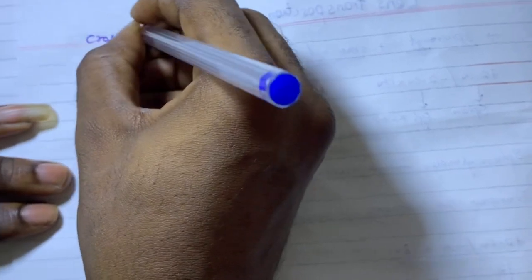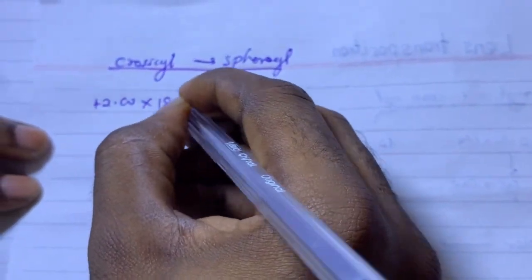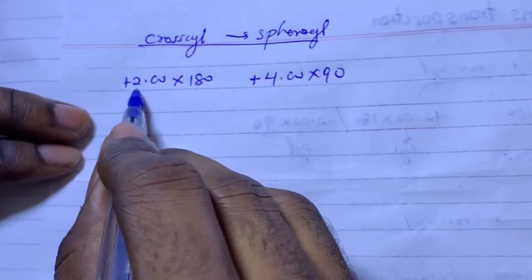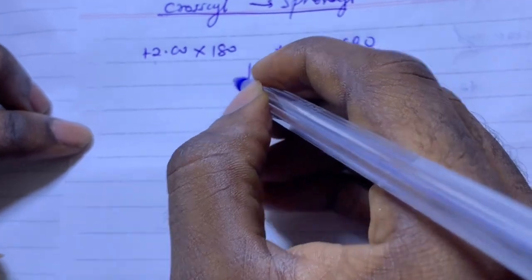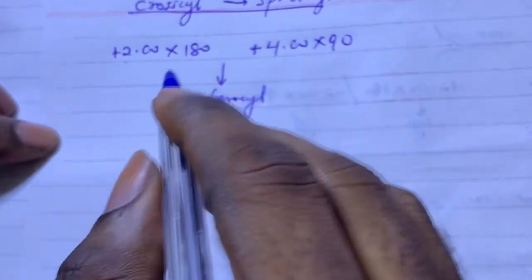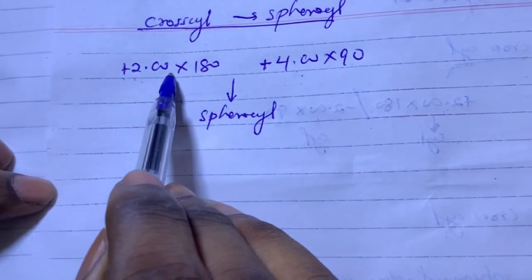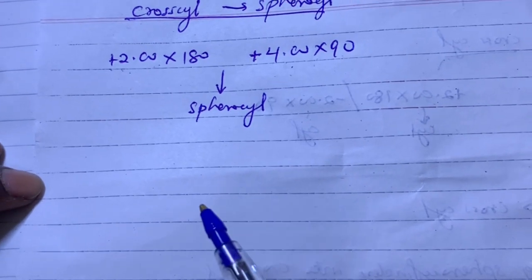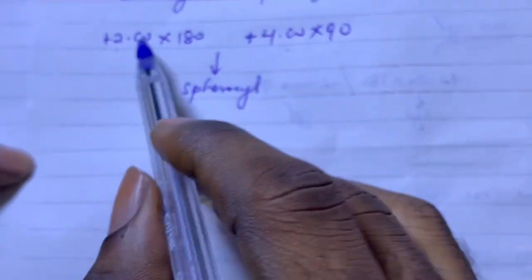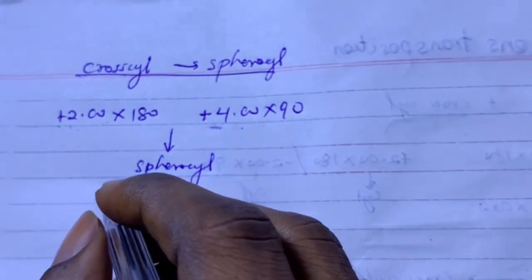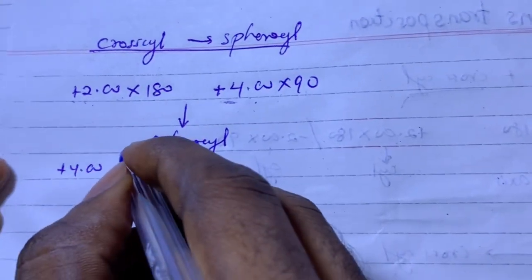Let's say I'm given a prescription as minus two axis 180 combined with plus four axis 90. This has two cylinders, so it is a cross cylinder, and I need to transpose it into a sphero-cylinder. The first step is to look at the two cylinders and identify which one is the higher plus — meaning which is more positive. Here, plus four is bigger, so plus four is the more plus.